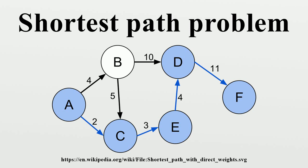Floyd-Warshall algorithm solves all pairs shortest paths. Johnson's algorithm solves all pairs shortest paths and may be faster than Floyd-Warshall on sparse graphs. Viterbi algorithm solves the shortest stochastic path problem with an additional probabilistic weight on each node.